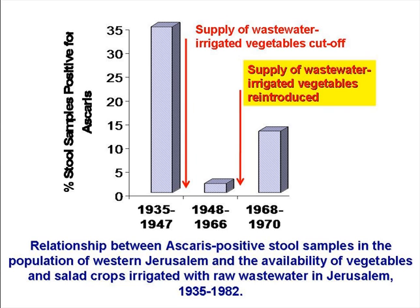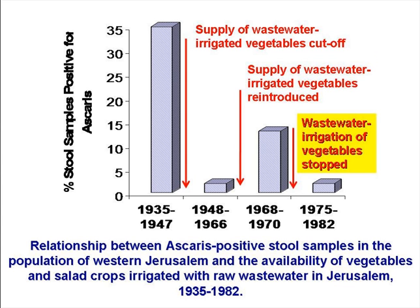In 1966 there was another war, and the outcome was that the city of Jerusalem was reunited. So once again the raw wastewater-irrigated salad crops from eastern Jerusalem were on sale in western Jerusalem, and over the next five years ascaris prevalence in western Jerusalem increased to around 13%. In 1970, the irrigation of salad crops with untreated wastewater was stopped by the City Health Authority, as it was shown that the epidemic of cholera which occurred in the city that year was due to the consumption of salad crops irrigated with raw wastewater containing Vibrio cholerae, the bacterium that causes cholera. So during the period 1975–1982, ascaris prevalence in the population of western Jerusalem fell again to the low level of 2–3%.